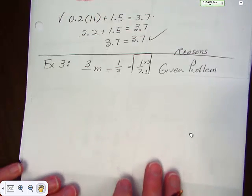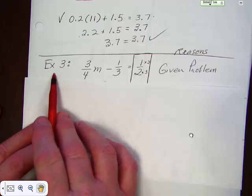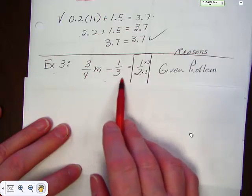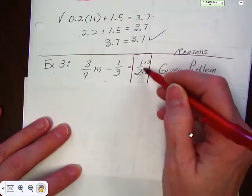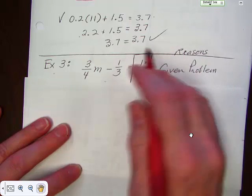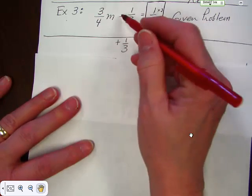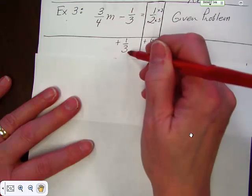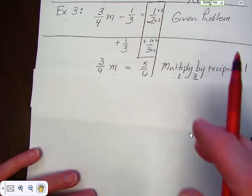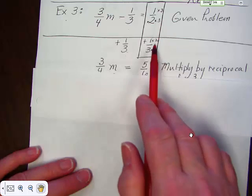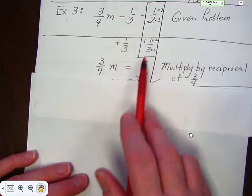Here is another example — this one has fractions. Example 3: three-fourths m minus one-third equals one-half. It's a given problem. We have minus one-third here, so I have to add one-third. Minus one-third plus one-third is going to be 0. Then we add one-half and one-third, so I turned it into sixths. We end up with three-fourths m equals five-sixths.